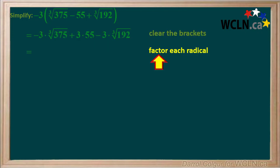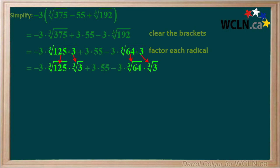The next step is to factor each radical if we can. 375 can be factored to 125 times 3, and 192 can be factored to 64 times 3. Notice that 125 and 64 are both perfect cubes. The cube root of 125 times 3 is split to the cube root of 125 times the cube root of 3, and the cube root of 64 times 3 is split to the cube root of 64 times the cube root of 3.